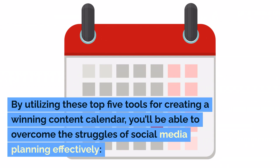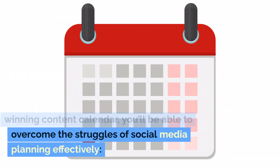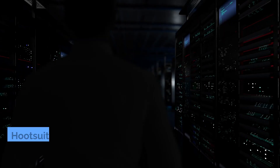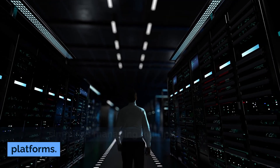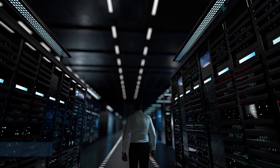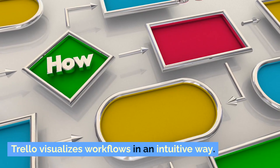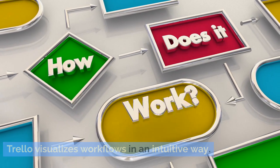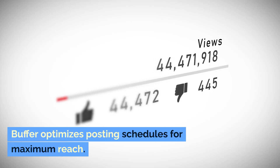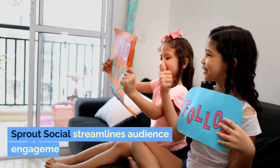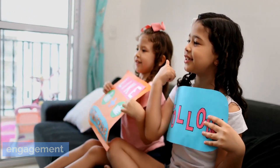By utilizing these top five tools for creating a winning content calendar, you'll be able to overcome the struggles of social media planning effectively. Hootsuite simplifies managing multiple platforms. CoSchedule enables seamless collaboration within teams. Trello visualizes workflows in an intuitive way. Buffer optimizes posting schedules for maximum reach. Sprout Social streamlines audience engagement.